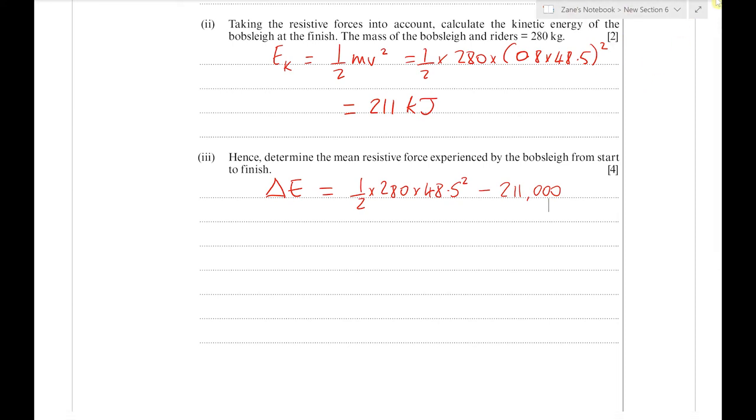The initial energy could be calculated from half times 280 times 48.5 squared, or from gravitational potential energy using mgh. The difference we get is about 119 kJ.